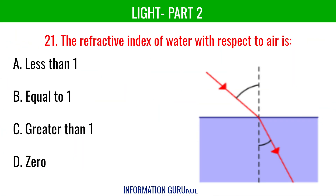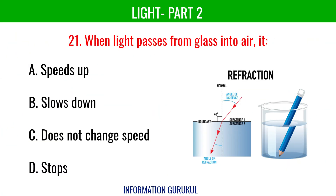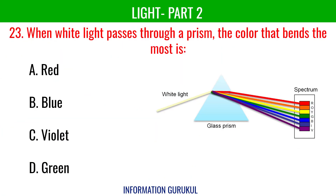The refractive index of water with respect to air is greater than 1. When light passes through a prism, the color that bends the most is violet.